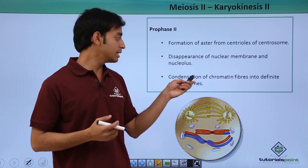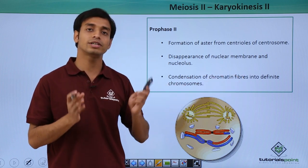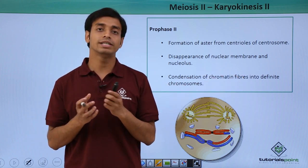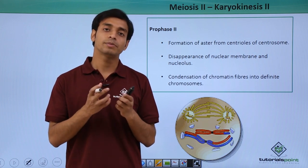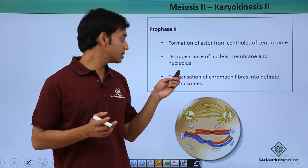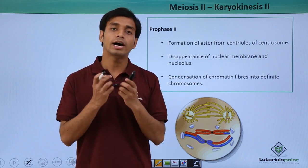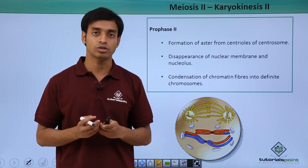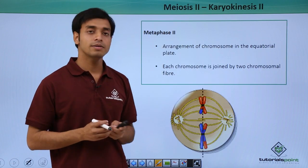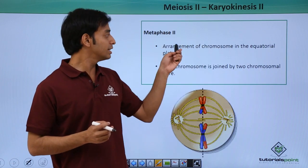The disappearance of the nuclear membrane and nucleolus is a similar activity to what was performed during mitosis. Prophase 2 also shows the condensation of the chromatin fibers into definite chromosomes. After the end of Meiosis 1, the DNA was present as a DNA network, so again the condensation of the chromosomes happens in order to attain proper chromosomal structures.